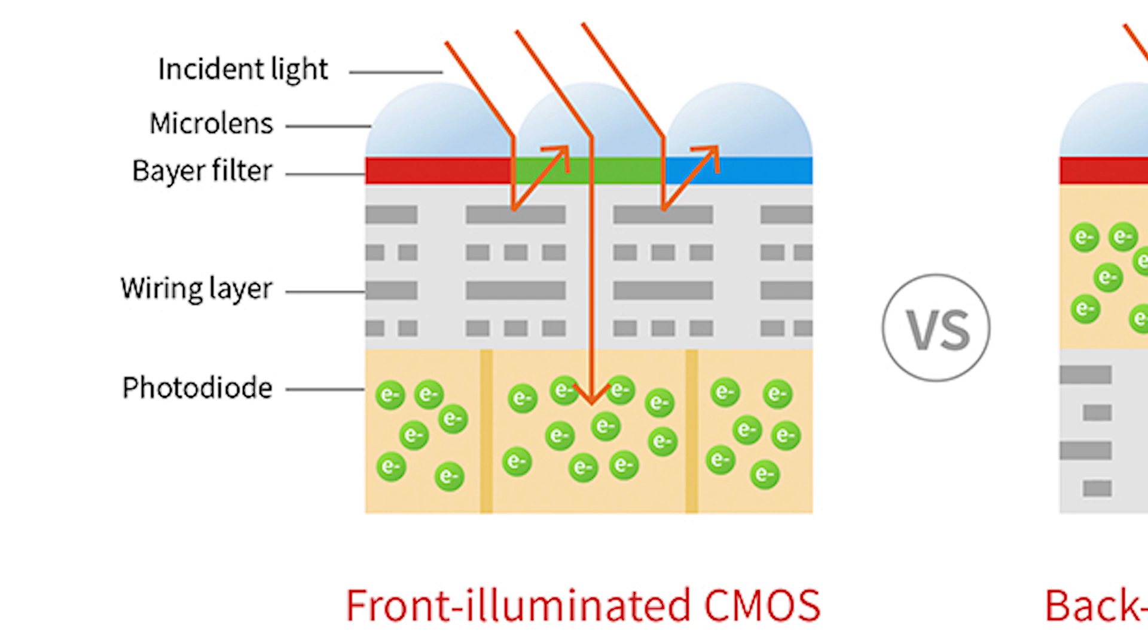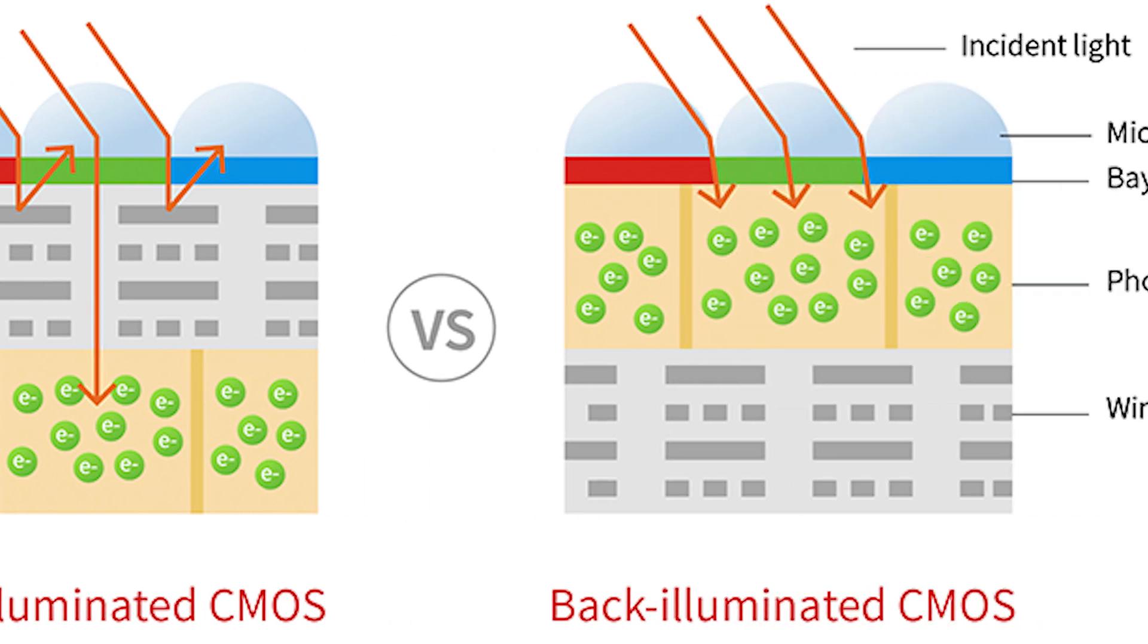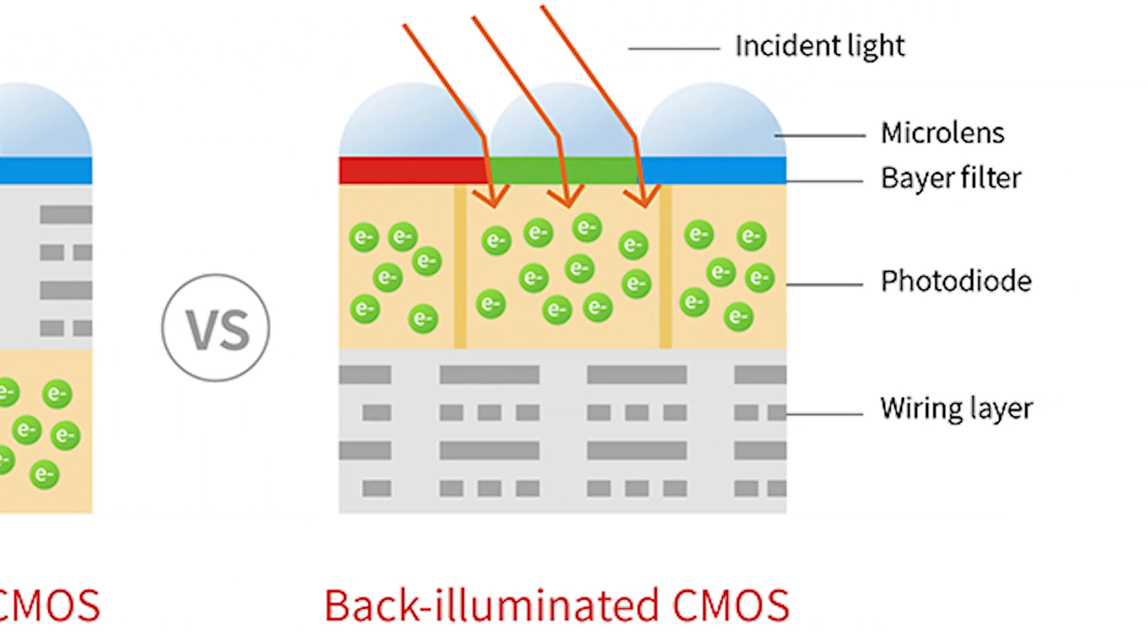Basically the reason is that the older sensors that are front illuminated had some metal wirings and some of the circuitry above the photo diodes actually captured the light, so they actually block a little bit of the photons. But now because that circuitry is behind the diode, it's microlens straight onto the diode and detected immediately. Ultimately that means less integration time for the same amount of light, and the images are going to be cleaner as well.